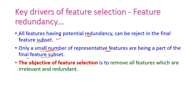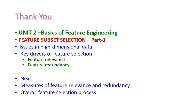The objective of feature selection is to remove all features which are irrelevant and redundant. So far we have seen feature subset selection, issues in high dimensional data, and in feature selection, two categories: feature relevance and feature redundancy. In the next class, we will see the measures of feature relevance and redundancy, and after that, the overall feature selection process. Thank you.